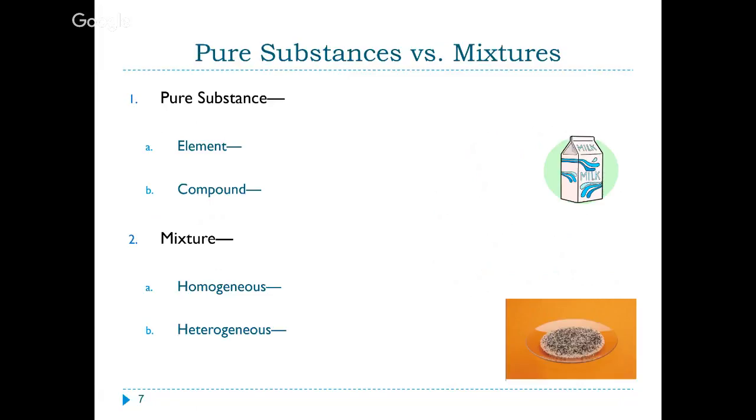A heterogeneous mixture is the opposite of that, where each sample that you would take would look different from where you took it from. So I'm showing down here in the corner a mixture of salt, or not salt, of sand and iron. If I were to take a spoon and spoon out some of this sand-iron mixture, it's not going to look the same because some parts would have more iron, some parts would have more sand. So heterogeneous mixtures are looking at something where when you take the sample it does not look the same as what you took it from.